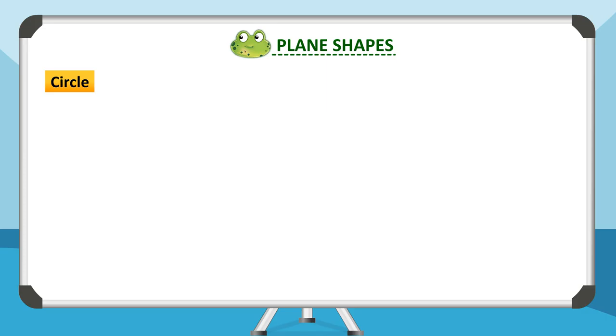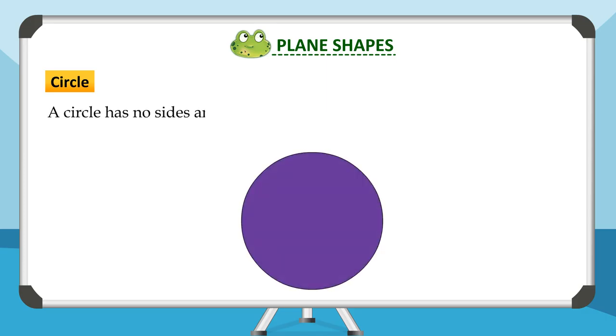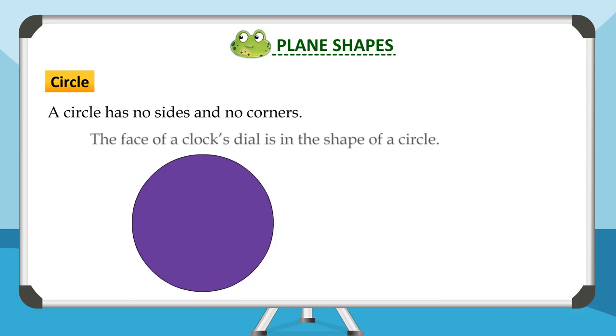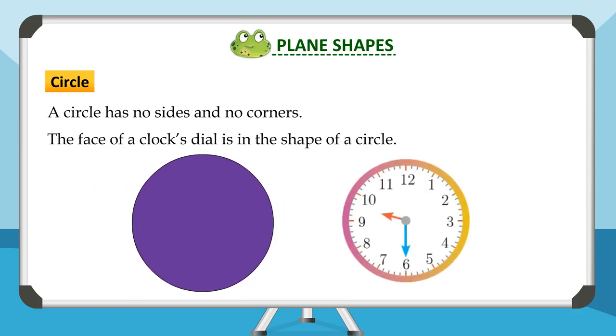A circle has no sides and no corners. The face of a clock's dial is in the shape of a circle.